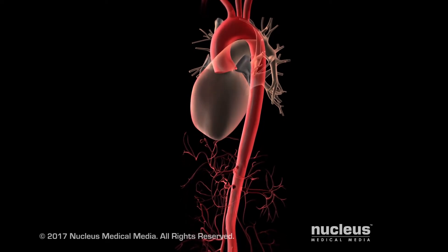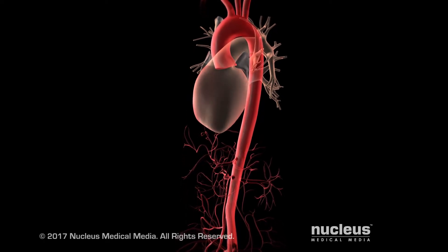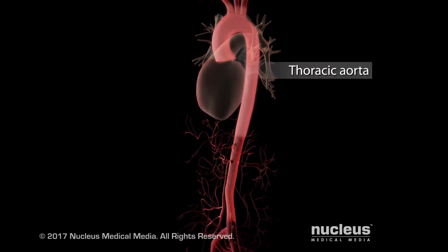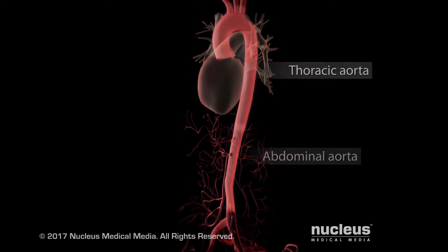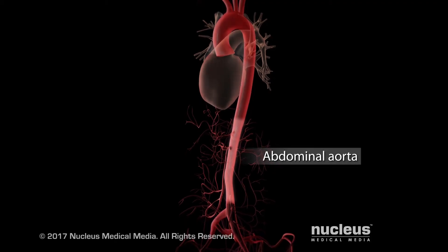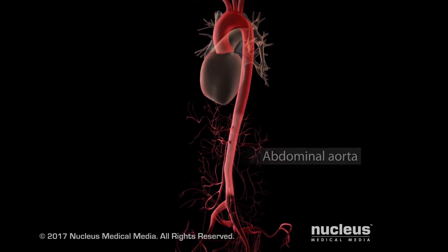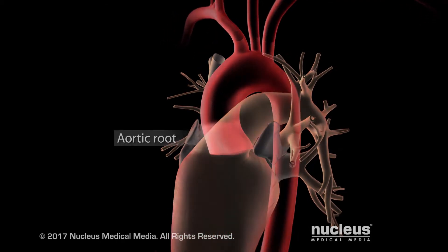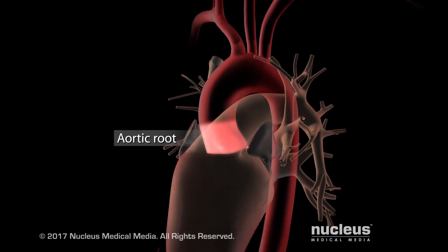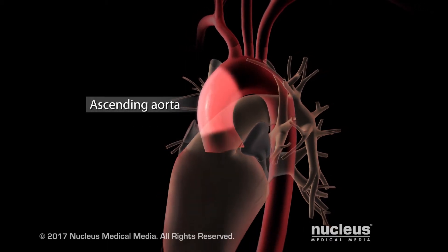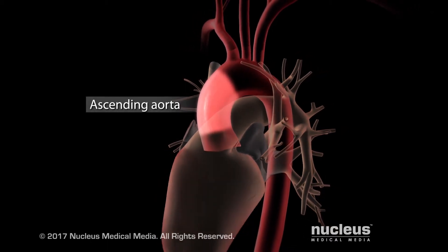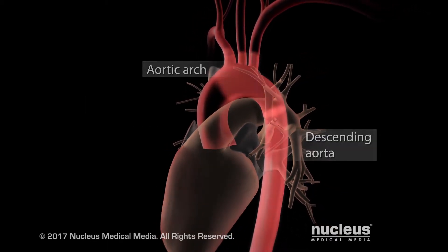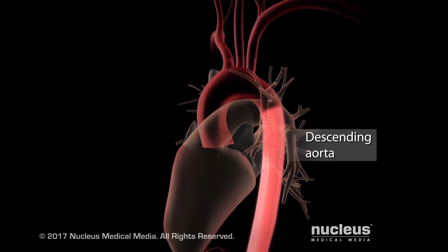Your aorta is divided into two main sections: the thoracic aorta and the abdominal aorta. The thoracic aorta has four parts: the aortic root, ascending aorta, aortic arch, and descending aorta.